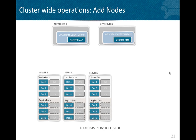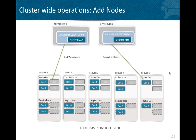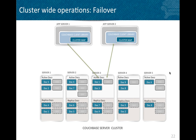Adding nodes in Couchbase Server is quite easy. Applications use a smart client library to talk to the back-end Couchbase Server nodes. When you add new nodes — say node 4 and node 5 — and initiate a rebalance, data is moved from the existing nodes to the new nodes, giving you a good distribution of data across the cluster. The application can then also talk to these newly added nodes.